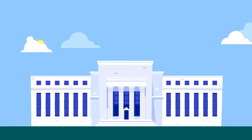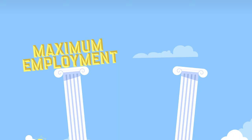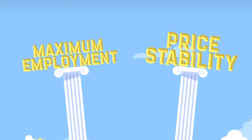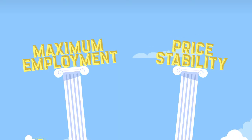The Federal Reserve, the Fed, is the central bank of the United States. One of its important functions is to promote a strong U.S. economy. Congress has given the Fed two main goals: maximum employment and price stability. These goals are often referred to as the Fed's dual mandate.